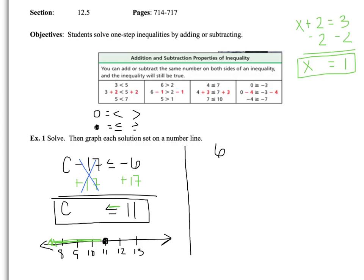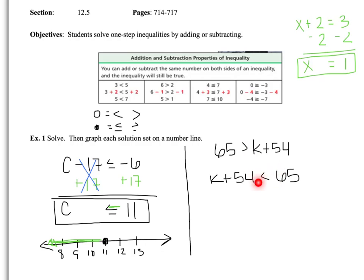Let's try one on your own. I've got 65 is less than K plus 54. Just like when we were doing equations, this one's kind of reflected backwards — it's called a symmetric inequality, where K is on the right-hand side. You can go ahead and rewrite this as K plus 54, but you have to be careful because that sign also has to flip around the 65. The hungry alligator mouth was trying to eat the 65, so when we flip the inequality, we have to flip the sign so that it's still trying to eat the 65. Go ahead and solve this, then pause and check back in.